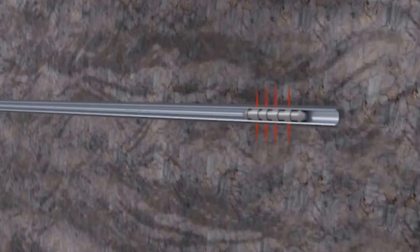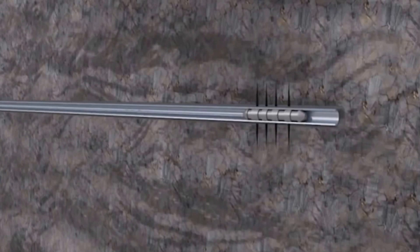This perforating gun is then fired, which creates holes through the casing, cement, and into the target rock. These perforating holes connect the reservoir and the wellbore.